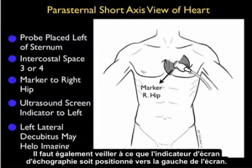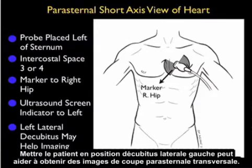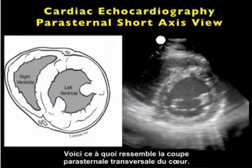That's with the caveat that the ultrasound screen indicator is positioned towards the left of the screen. Moving the patient into left lateral decubitus position may also help imaging from the parasternal short axis plane.